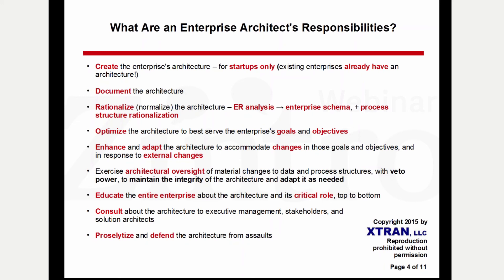Once we've got our architecture documented and rationalized, the next thing is to go through it and make sure it is optimized to serve the enterprise's goals and objectives as effectively as possible. It isn't enough to say we've got an architecture and there it sits — that architecture has to serve what the enterprise is there to do. This also addresses the criticism that enterprise architecture is too ivory tower and not related to the business. If you think about EA pervading every nook and cranny of the enterprise, affecting and being affected by pretty much everything, and being optimized in terms of what the enterprise is trying to do — that's as business-oriented as you could possibly get.